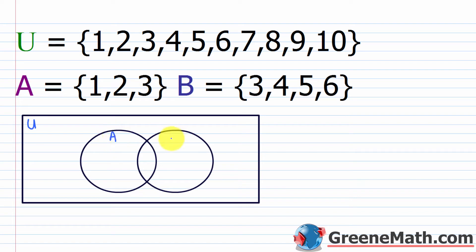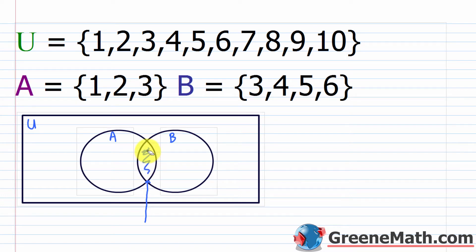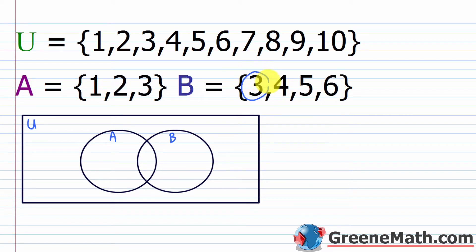I can label each circle — one as A and the other as B — and I would list elements inside the area that corresponds to each set. One thing to notice right away: there's a section of overlap between the circles. This overlap is used to place any element that is part of set A and also part of set B — a common element. So 3 is common to each set.